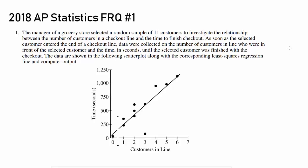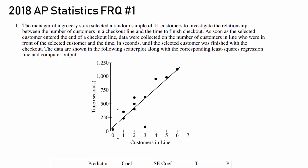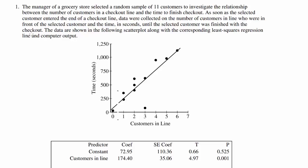It's time to take 2018 AP Statistics free response, number one. The manager of a grocery store selected a random sample of 11 customers to investigate the relationship between the number of customers in a checkout line and the time to finish checkout. So we are comparing these two, number of customers in the line and the time it takes to finish the checkout. I'm guessing the more customers you have, the longer it's going to take.